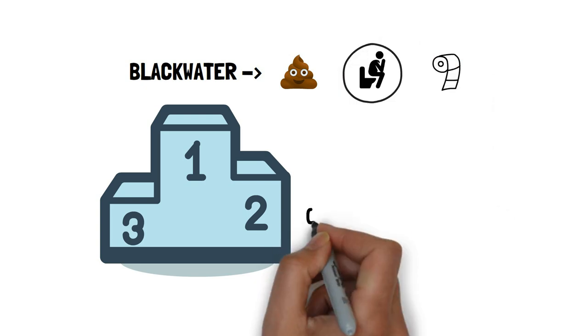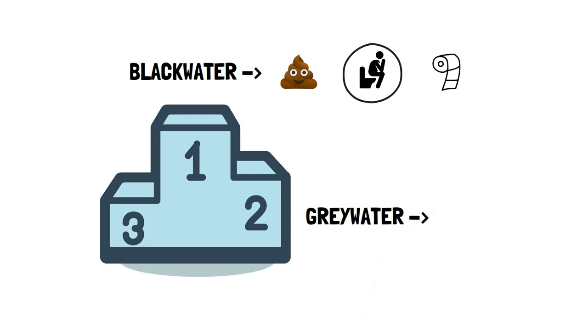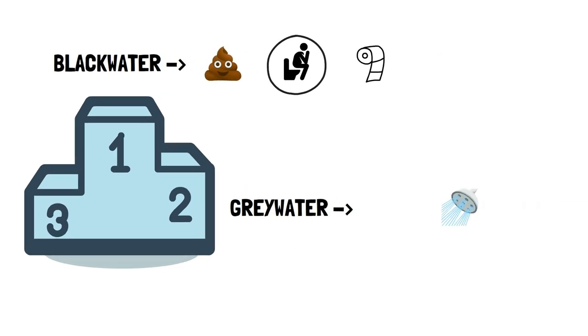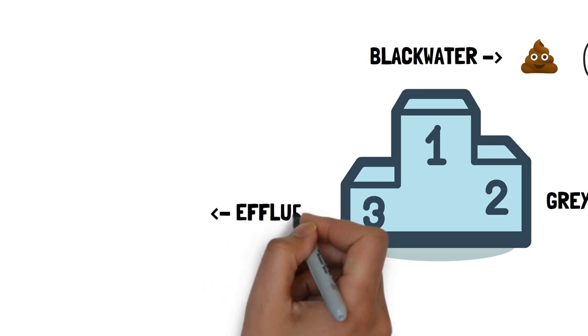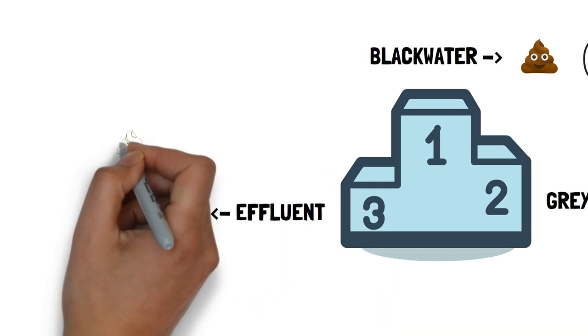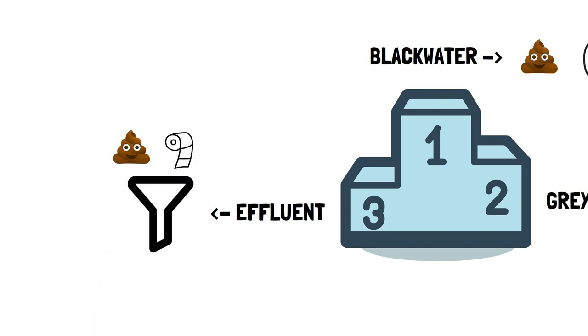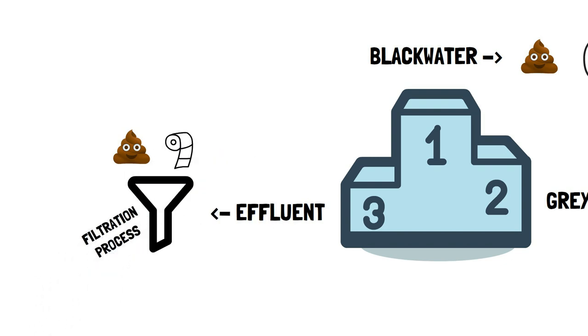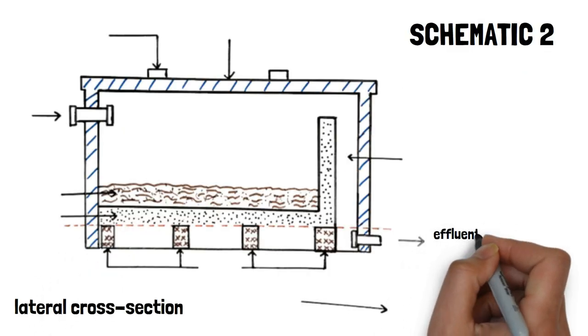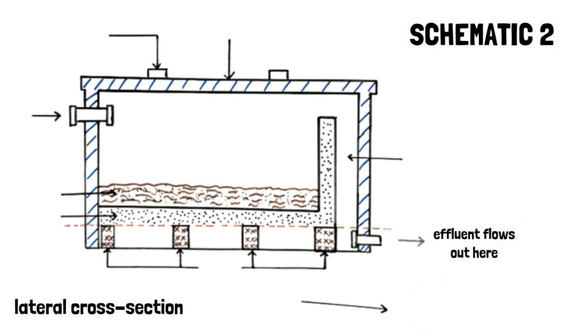The second term is grey water. This refers to the waste water that comes from the shower areas, laundry, and the kitchen. It's called that because it's usually grey in color. The third term is effluent. This is where the black water has undergone some treatment where the solids have been separated from the liquid. This usually comes out of the outlet pipe of the biodigester.